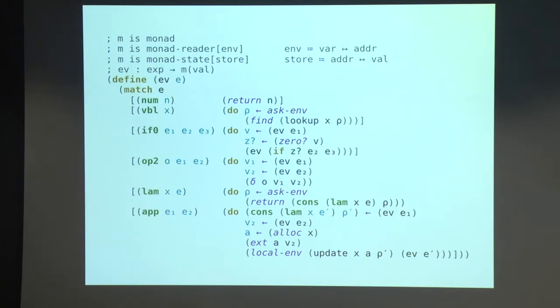The final two things I have in this language are lambdas and application. And this is the usual thing. Lambdas evaluate to closures where I pair the lambda with its environment. And for application, we evaluate the function, pull out the closure, evaluate the argument. Here I'm allocating a new address a by calling alloc on x. This is giving me a fresh address a. Ext I'm leaving as a parameter, which extends the store to map a to that value. And then I update the closure environment with that new binding and then go to evaluate the body of the lambda.